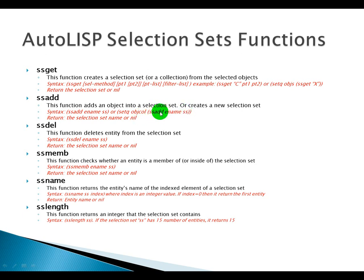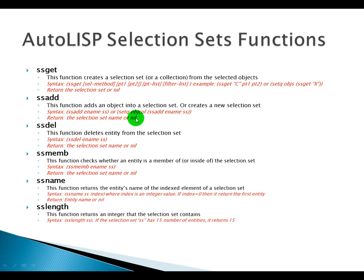You can add a new object or a new entity name and store it in a variable. This means the selection set containing all existing objects plus the new entity will be stored in that variable. The return value is the selection set name, or nil.